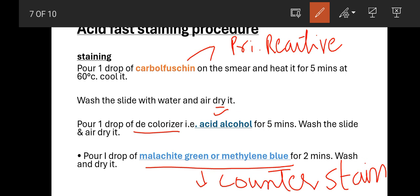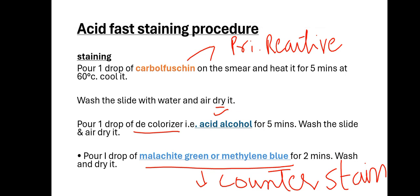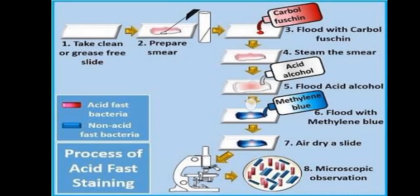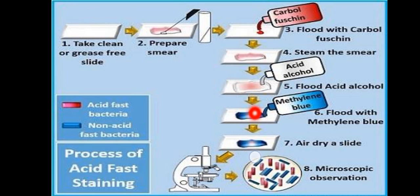Then apply the counter stain, which is malachite green or methylene blue. So the complete staining steps are: primary reactive ingredient (carbol fuchsin) with heat applied, then acid alcohol as decolorizer, then counter stain (malachite green or methylene blue). Remember the sequence: primary reactive ingredient, decolorizer, counter stain. Apply heat with the primary stain, then acid alcohol, then methylene blue, then wash and dry the slide.